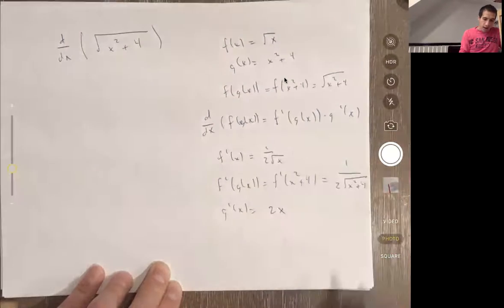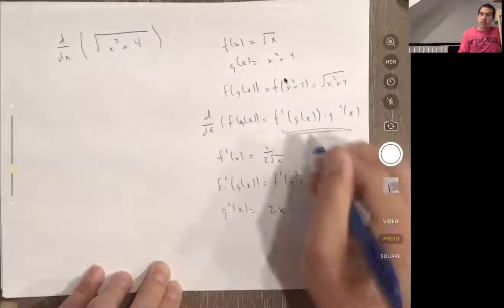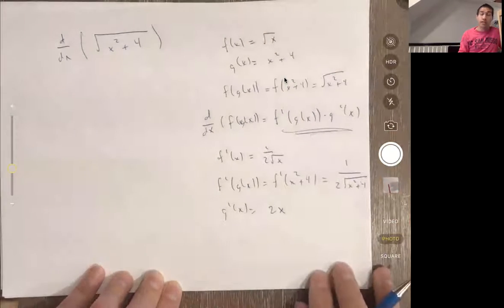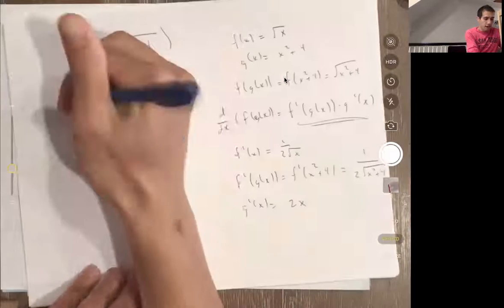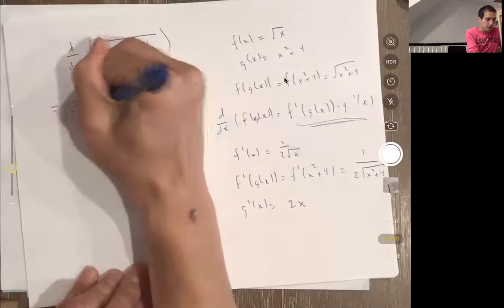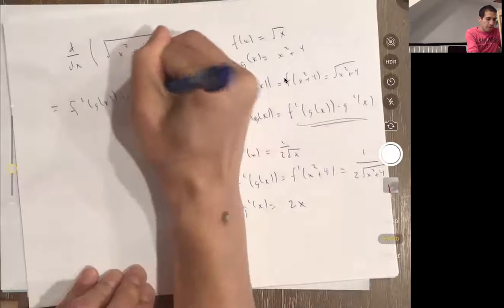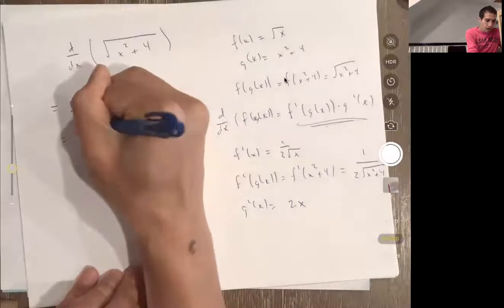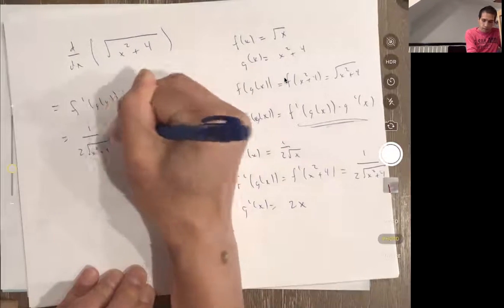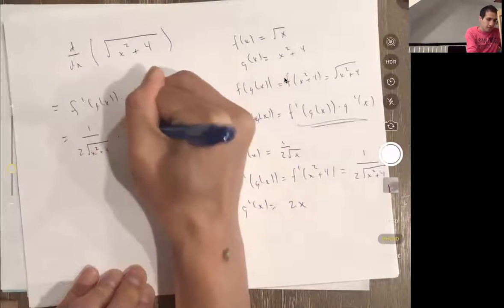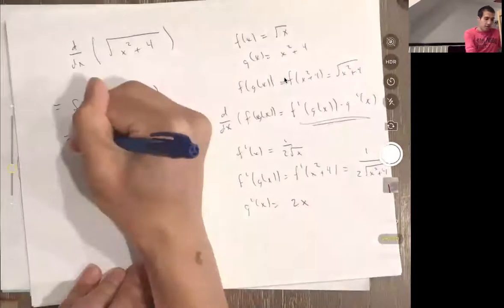And so now I know all the terms in the chain rule here. So I'm going to just plug them in. The derivative of this is f'(g(x)) times g'(x), which is 1 over 2√(x² + 4) times 2x. And so this is the derivative.